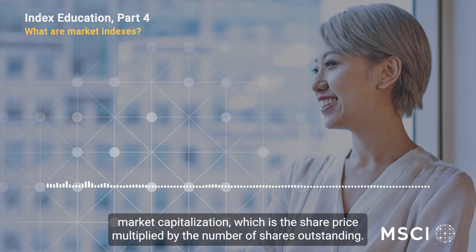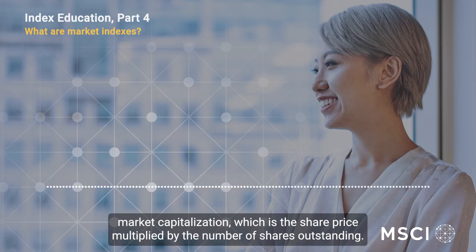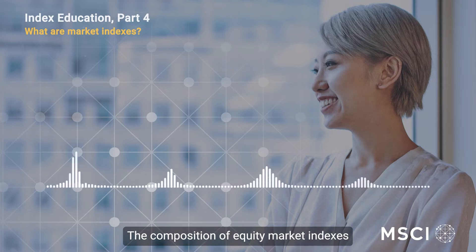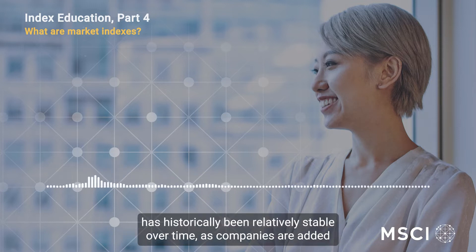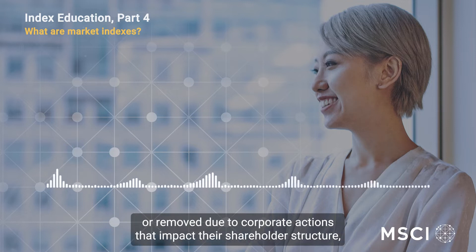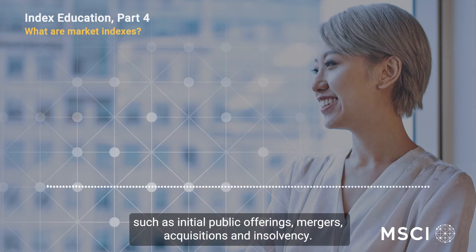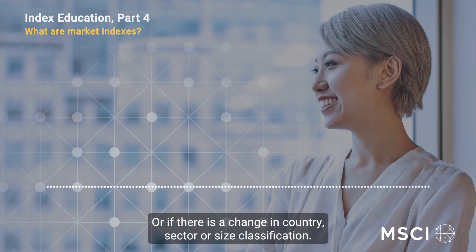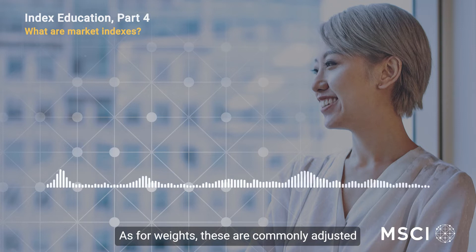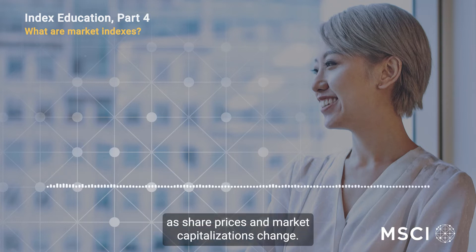which is the share price multiplied by the number of shares outstanding. The composition of equity market indexes has historically been relatively stable over time, as companies are added or removed due to corporate actions that impact their shareholder structure, such as initial public offerings, mergers, acquisitions, and insolvency, or if there is a change in country, sector, or size classification. Weights are commonly adjusted as share prices and market capitalizations change.